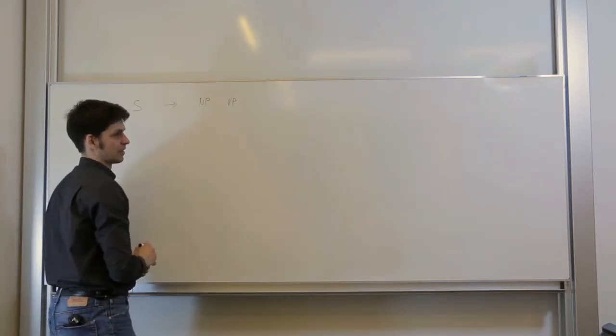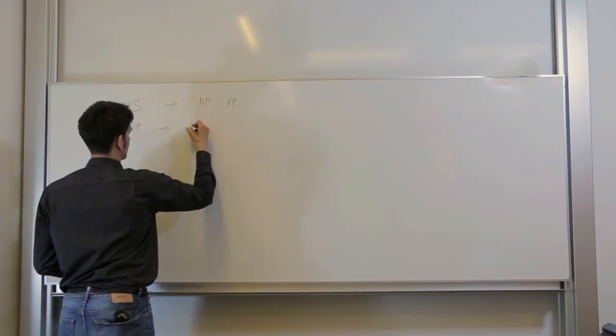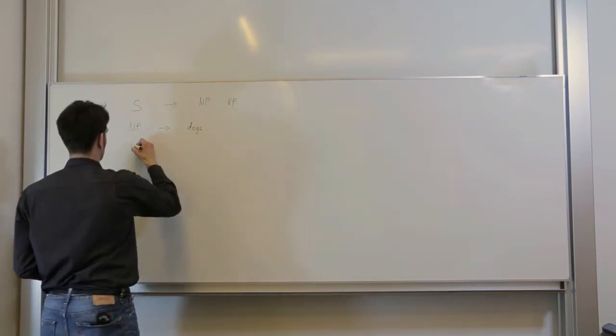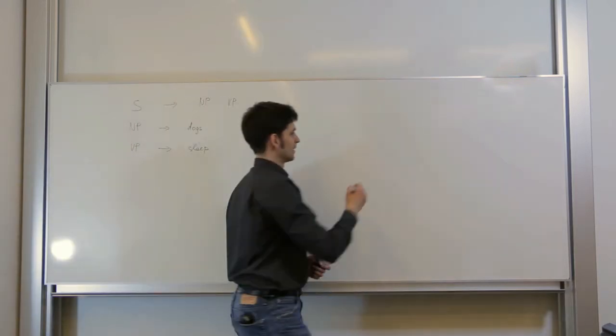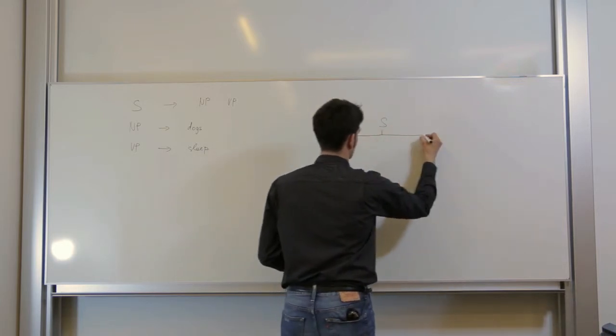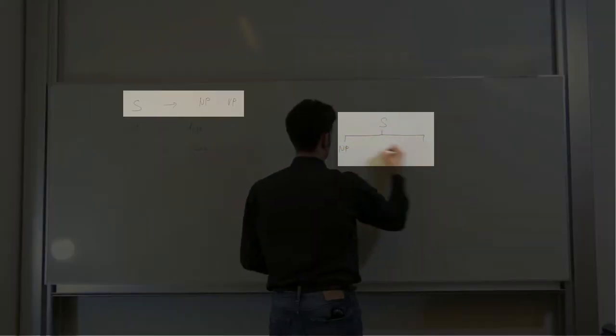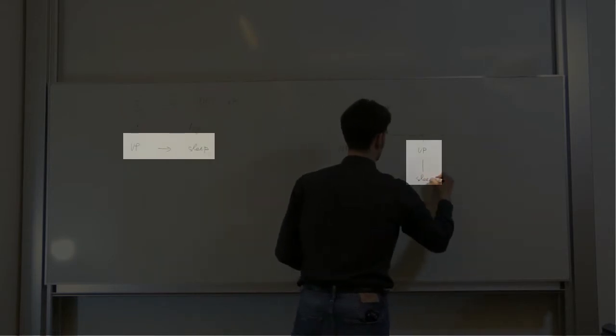Other rules tell us what this noun phrase can be. So one example would be the word dogs and the VP could be the verb sleep. The derivation of the whole sentence is captured in the so-called constituency tree. S goes to NP and VP and this NP goes to dogs and the VP goes to sleep.